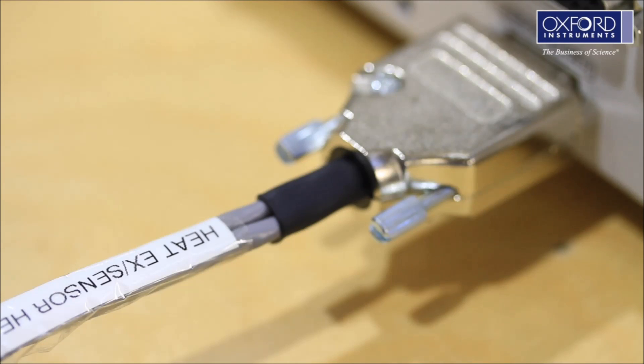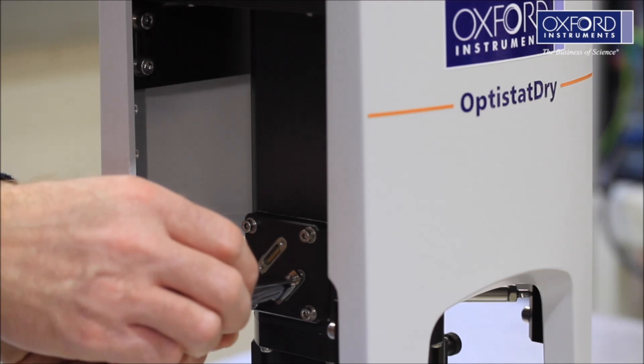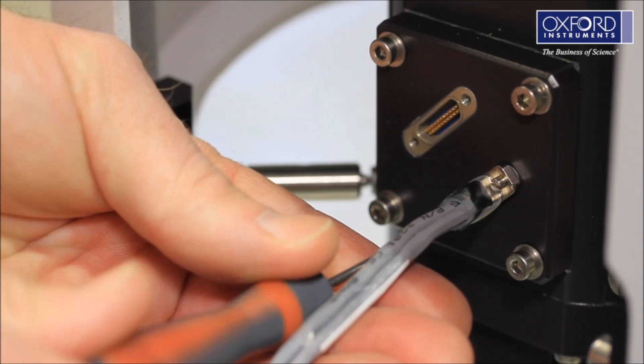Connect the other end to the 15-way micro-D connector on the cryostat. Again, tighten the retaining bolts to ensure good electrical connection.